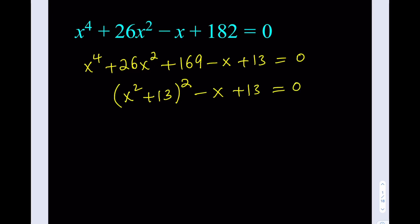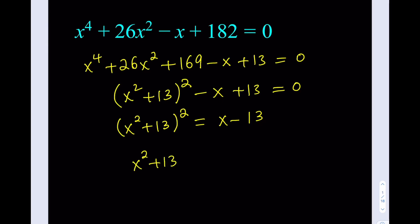What is beautiful about this equation is that the 13 appears twice. I'm going to add x minus 13 to both sides, giving me x squared plus 13 quantity squared equals x minus 13. The left-hand side is always positive, therefore the right-hand side should also be positive if we're looking for real solutions, which means I can square root both sides safely. So I get x squared plus 13 equals the square root of x minus 13.